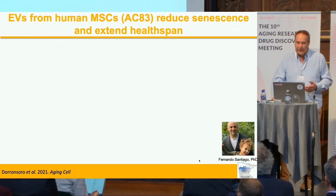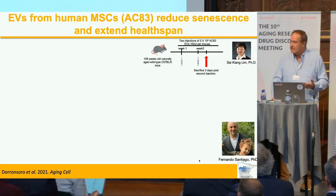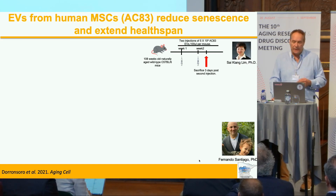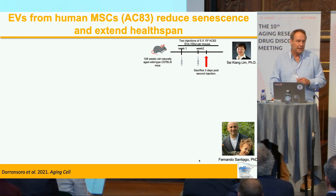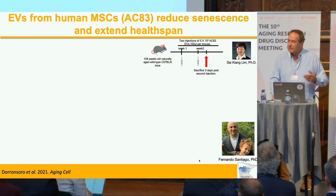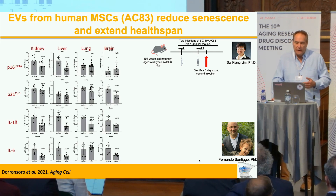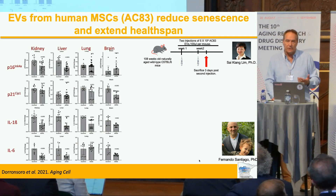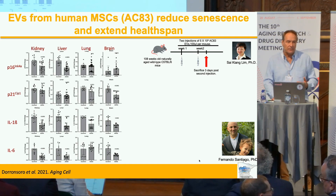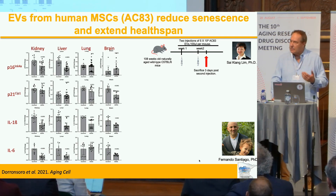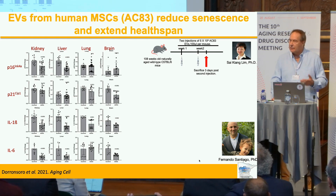We went on to show that if you treated two-year-old wild-type mice with just two injections of 10^9 EVs — these are human MSC-derived EVs provided by Sai Kiang Lim from Singapore, who prepares them, lyophilizes them, and sends them across the world for us to inject — we could see a reduction in markers of senescence, in particular p16, but also IL-1 beta expression and others. So there appeared to be a senomorphic activity conferred by young wild-type human MSCs.